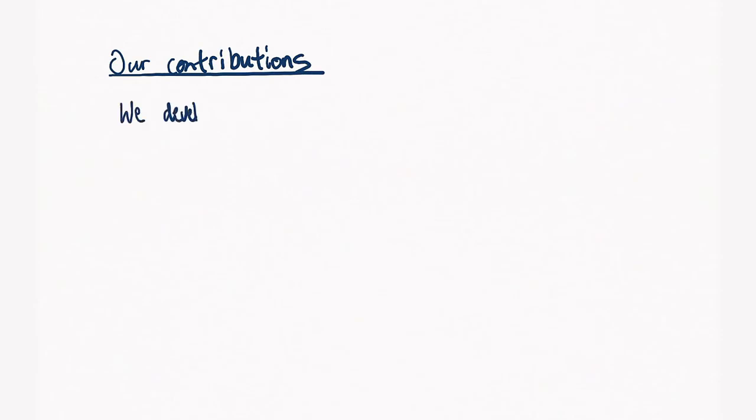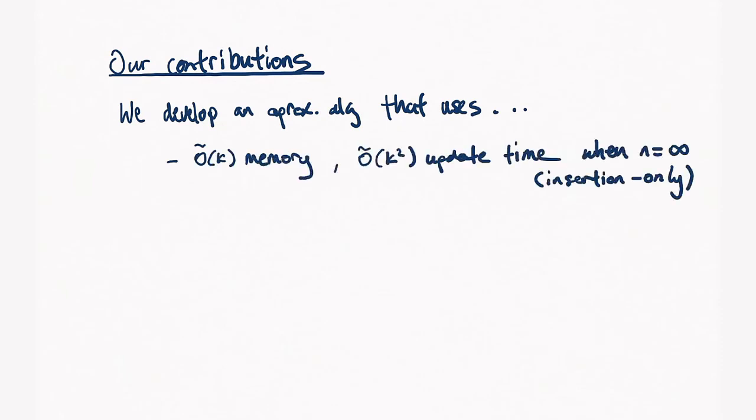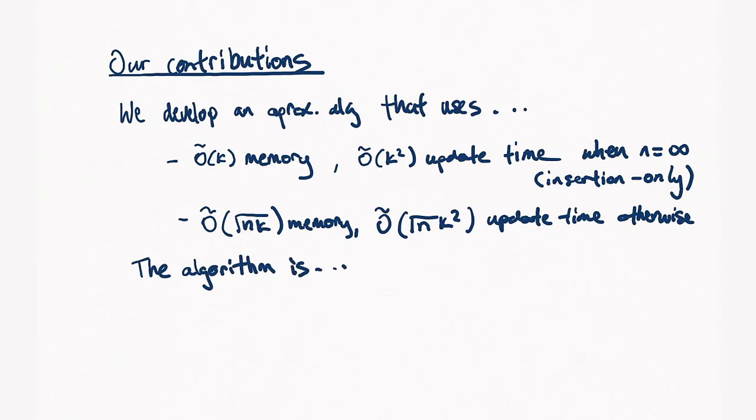So, our contributions are as follows. We develop an approximate algorithm that uses only O(k) memory and k-squared update time when the stream is insertion only, which means we never forget any of the user events. So, this corresponds to when n equals infinity. When we have a window, for example, when we only care about the last 10,000 events, we have an algorithm that uses O(√nk) memory with O(√nk²) update time. The algorithm has several nice properties: it's easily parallelizable, and it's quite competitive with offline methods.